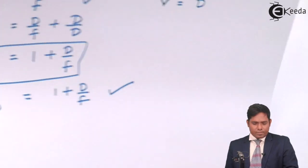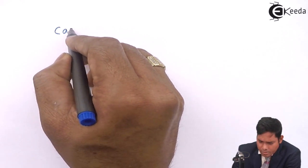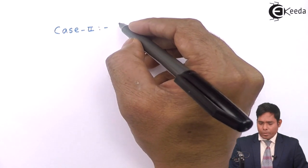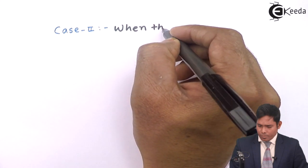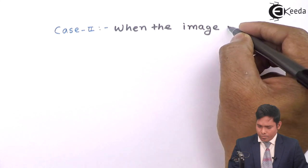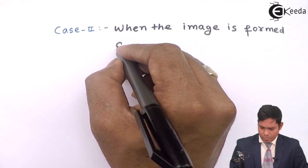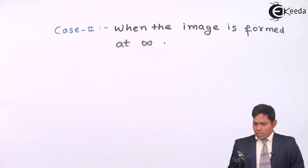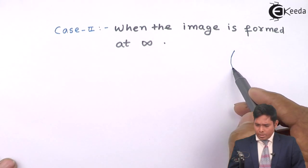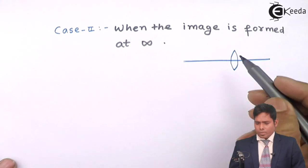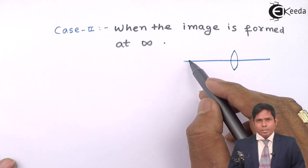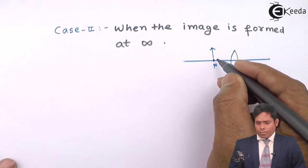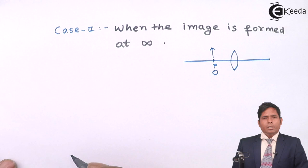Now we will take the second case. In case number two, we want to find the magnifying power when the image is formed at infinity. Let us visualize: this is my lens, and I want the object placed so that the image is formed at infinity. This is possible when the object is placed at the focus. If any object is placed at the focus, then we know its image is formed at infinity.